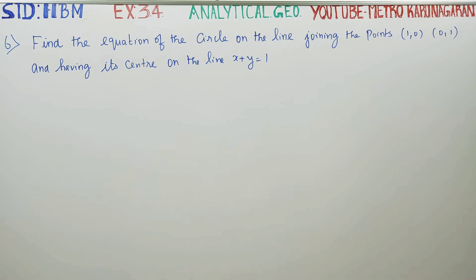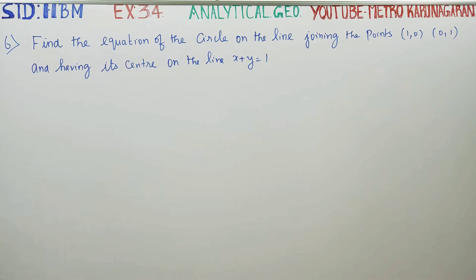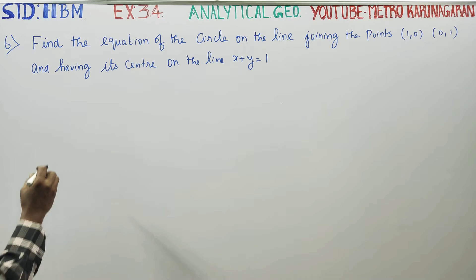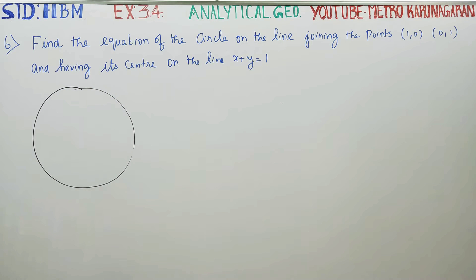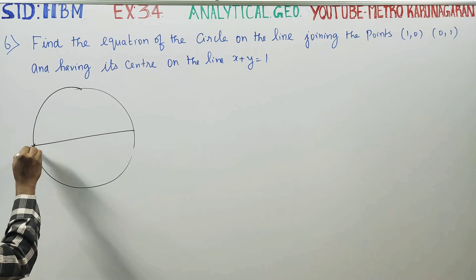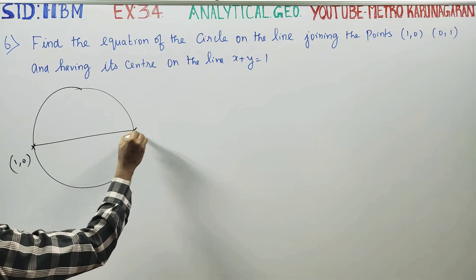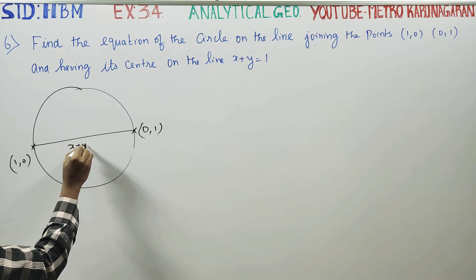Dear 11th Standard Business Maths students, in exercise number 3.4, sum number 6: find the equation of the circle on the line joining the points (1,0) and (0,1) and having its centre on the line x plus y is equal to 1.